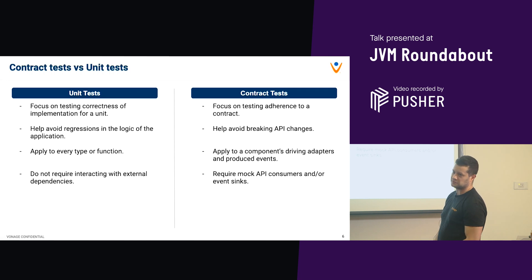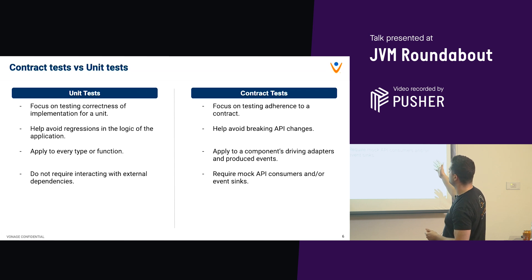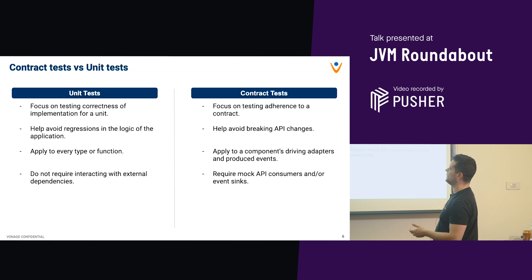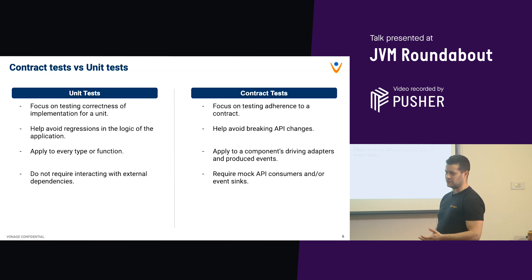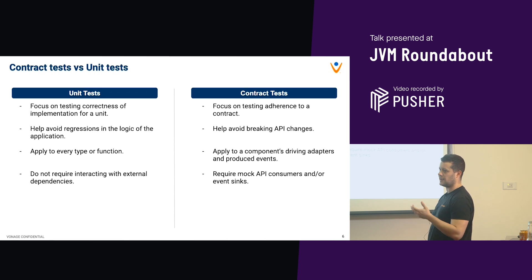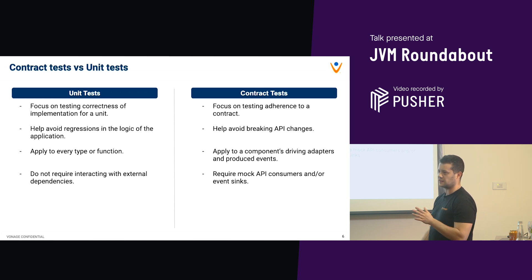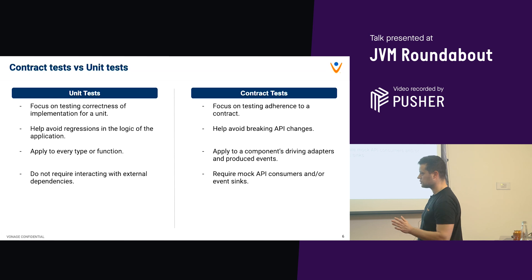Compared to unit tests: contract tests focus on testing adherence to a contract, while unit tests focus on the correctness of implementation. Unit tests allow you to avoid regressions in the main application logic - if you write them well, of course. Contract tests don't do that; typically the logic is stubbed, and they help you figure out if you're breaking your contract.